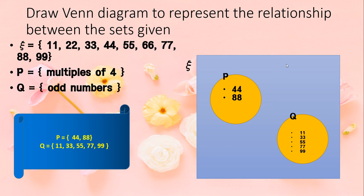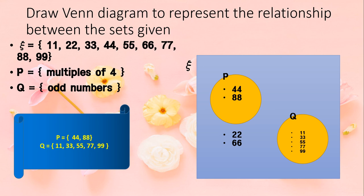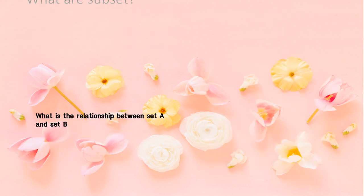Are there any elements that sit outside circles P and Q? Yes — besides multiples of four and odd numbers, there are two numbers that don't belong to either set: 22 and 66. These sit outside both circles P and Q inside the rectangle.